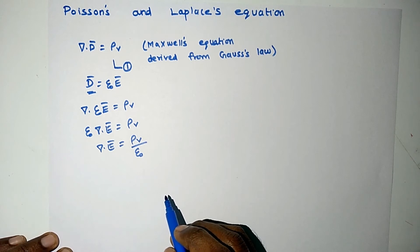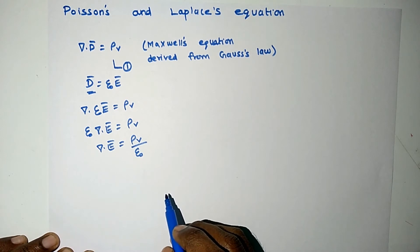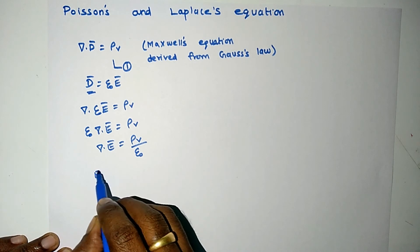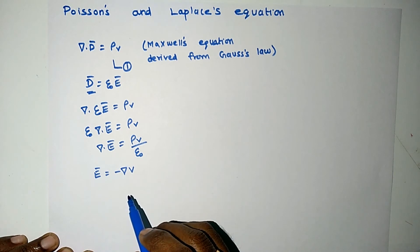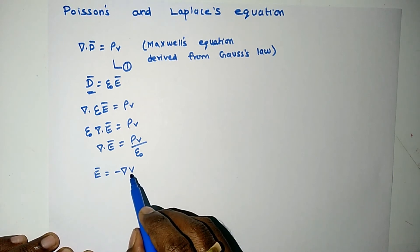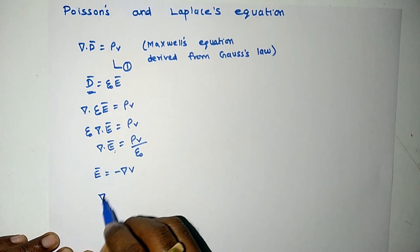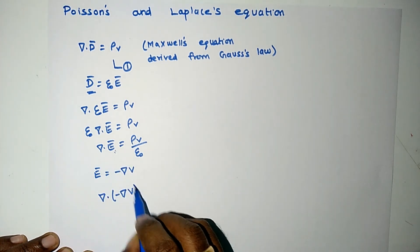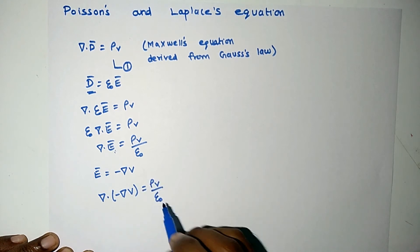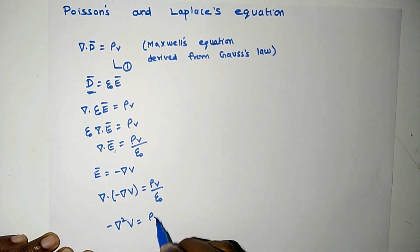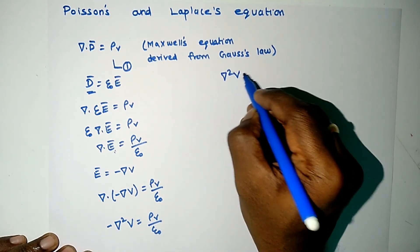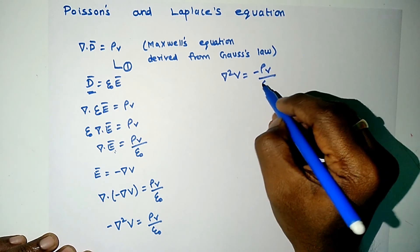Now we shall relate electric field intensity and electric potential. The relationship between electric field intensity and electric potential is E vector is equal to minus del V, where V represents electric potential. Substituting this equation, del dot minus del V is equal to rho v by epsilon naught. So we can write minus del squared V is equal to rho v by epsilon naught, and therefore del squared V is equal to minus rho v by epsilon naught.